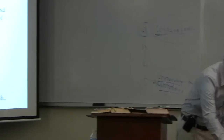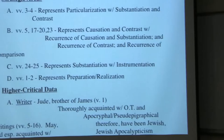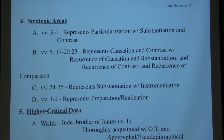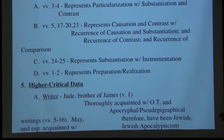We also identify key verses or strategic areas that represent major relationships identified. Verses 3 and 4 represent particularization with substantiation and contrast. Verses 5 and 17 through 20 and 23 represent causation and contrast with recurrence of causation and substantiation, and represent recurrence of contrast and the recurrence of comparison. Verses 24 and 25 would represent the substantiation with instrumentation, and verses 1 and 2 represent preparation and realization.